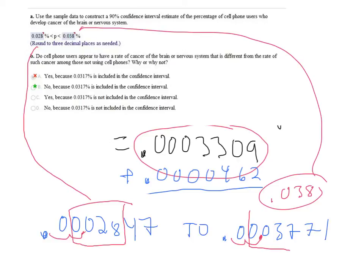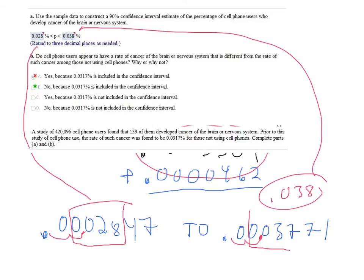And then to answer this last question, since the previous study found that 0.0317% of the people, prior to the study, the rate of cancer. So people that weren't using cell phones, this was the rate of cancer, and since that is inside that interval, in between that interval, it doesn't look like using cell phones has increased their cancer rates.